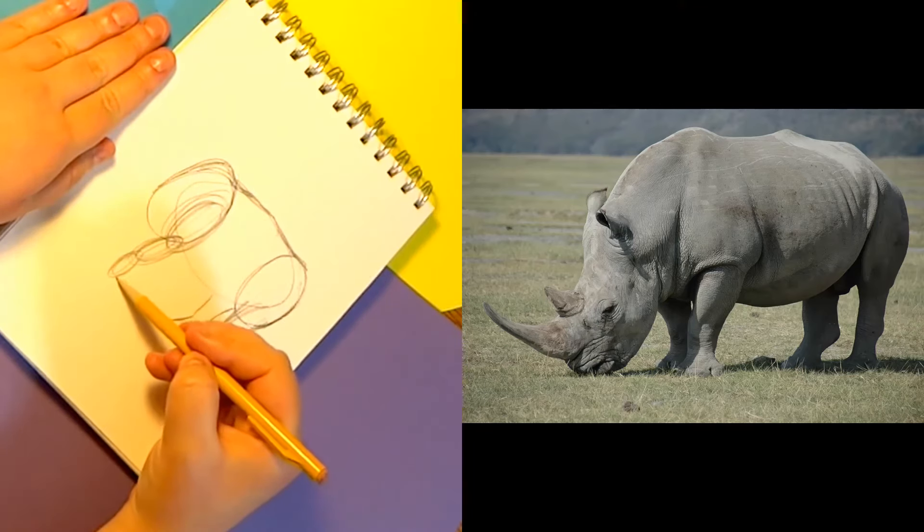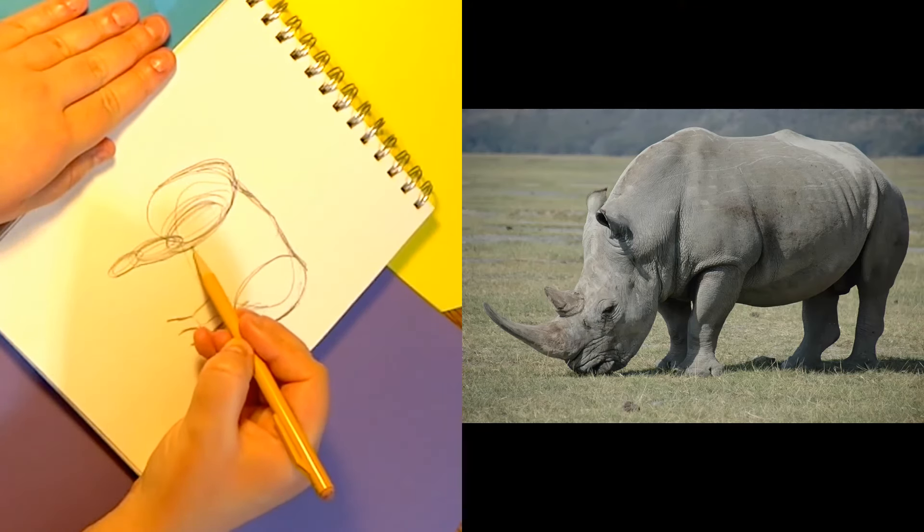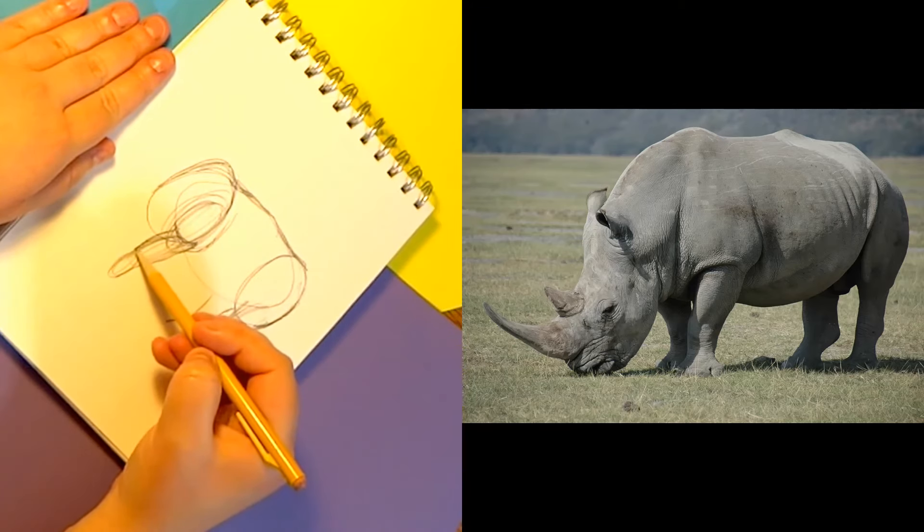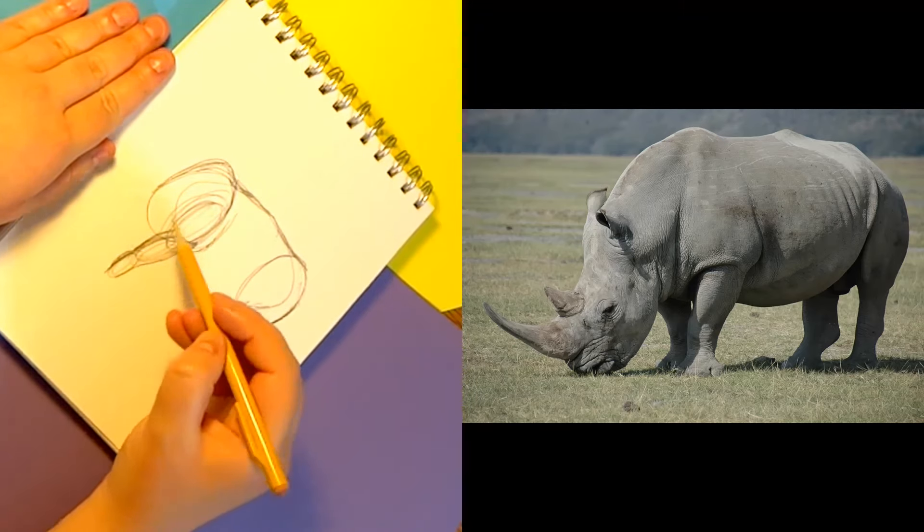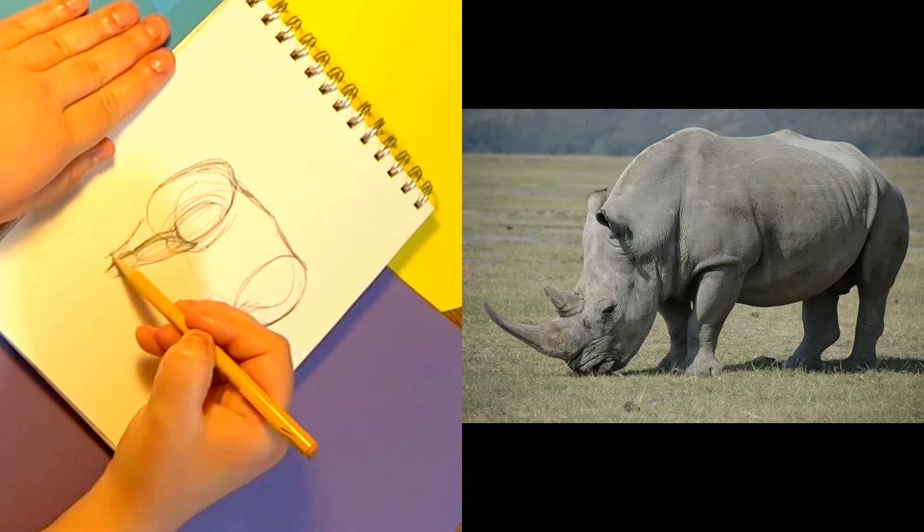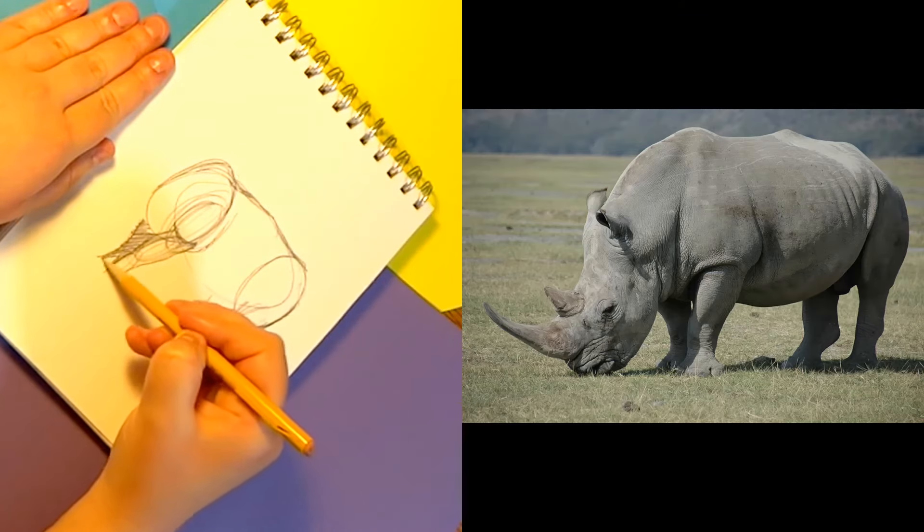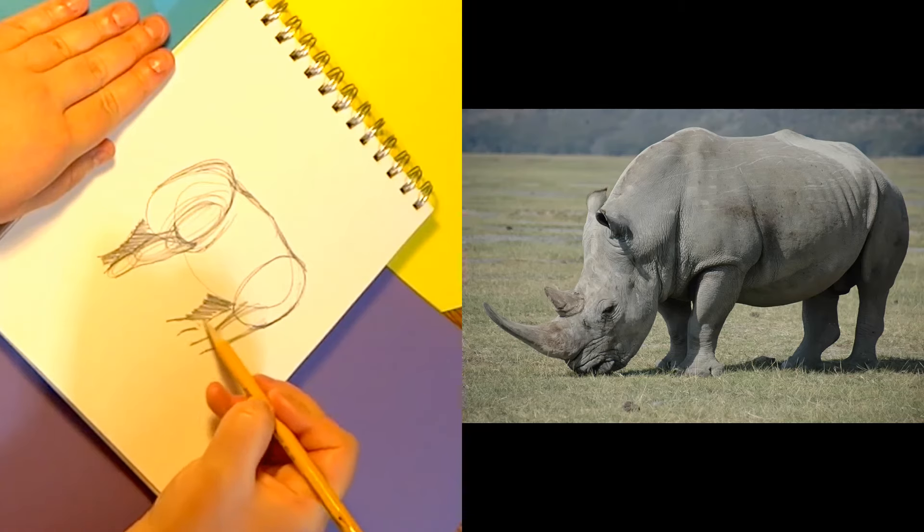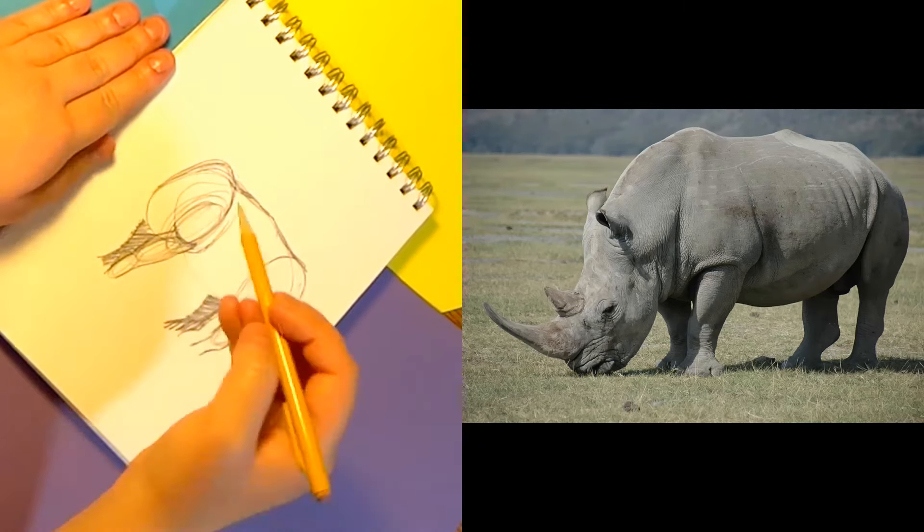So then if you connect all of those like this and then he's got some extra skin kind of hanging out here, because he's a big guy. Just like that. Another leg kind of peeking out behind it. Now these back legs we can darken quite a bit because they are very shadowed.